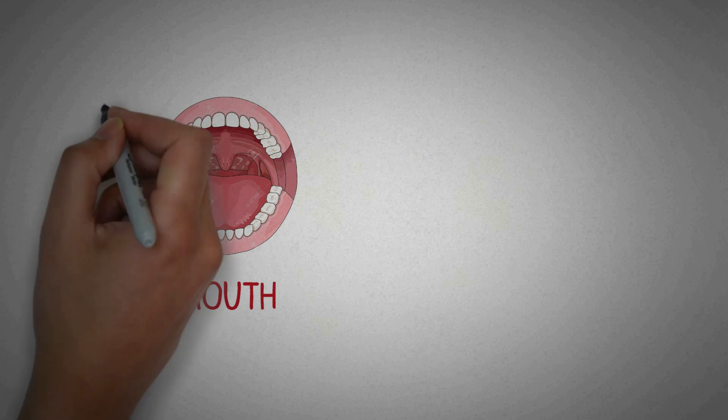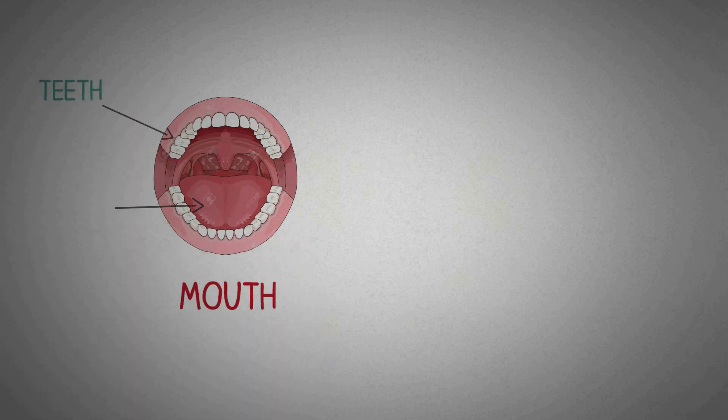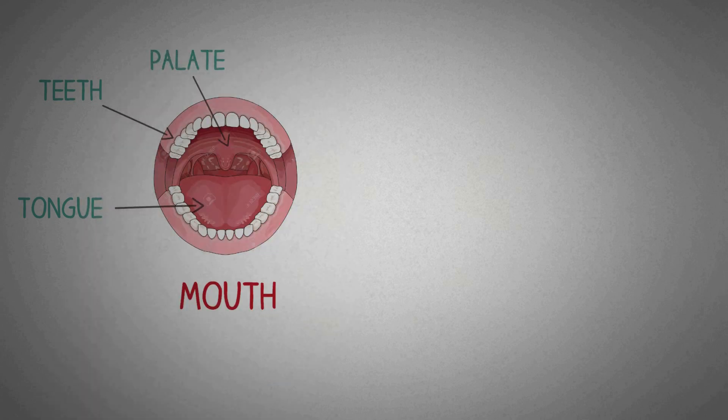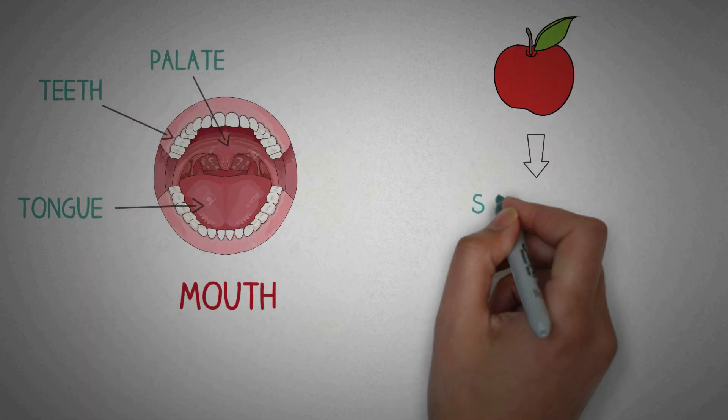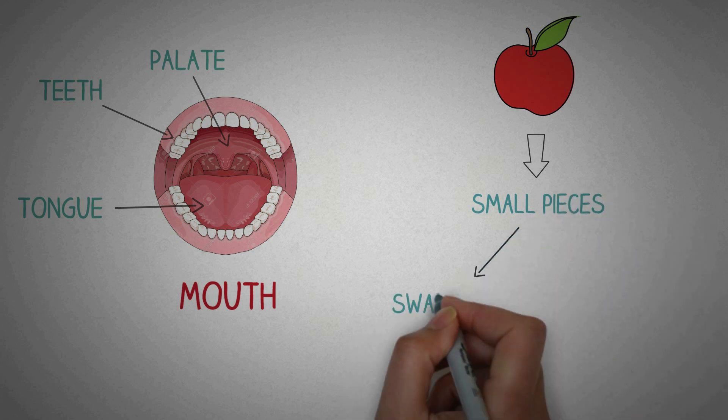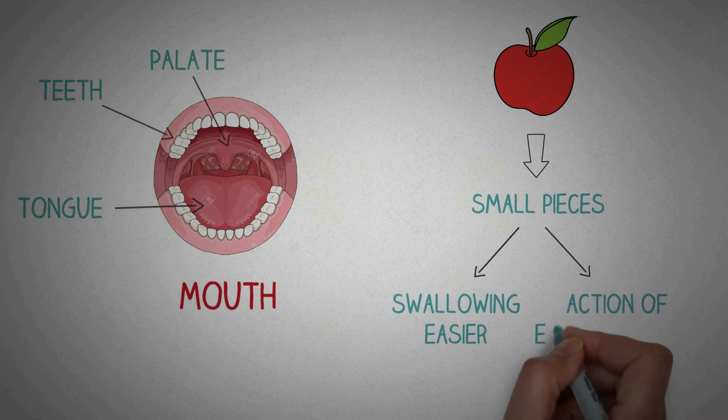The human digestive system starts with the mouth. The mouth consists of several structures that perform the first step of digestion. The teeth, tongue, palate help to chew the food which divides the food into several hundred pieces. This serves two important purposes. It makes swallowing of the food much easier and it increases the surface area of the food making the action of enzymes much faster.